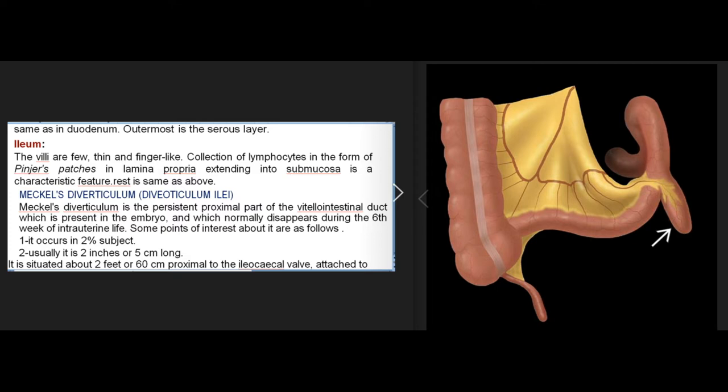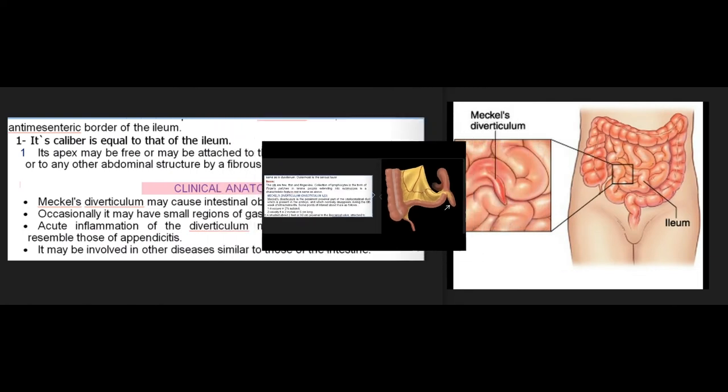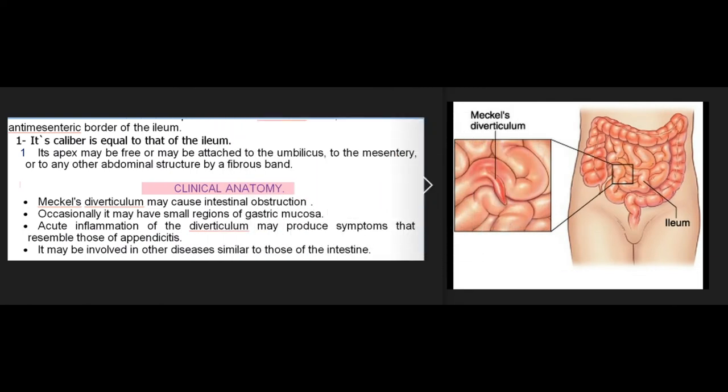Meckel's diverticulum is the persistent proximal part of the vitello-intestinal duct, which normally disappears during the sixth week of intrauterine life. It occurs in two percent of subjects, is usually two inches (5 cm) long, situated about two feet (60 cm) proximal to the ileocecal valve, attached to the antimesenteric border of the ileum. Its caliber equals that of the ileum; its apex may be free or attached to the umbilicus, mesentery, or other abdominal structures by a fibrous band. Meckel's diverticulum may cause intestinal obstruction, may contain gastric mucosa, and its acute inflammation produces symptoms resembling appendicitis.